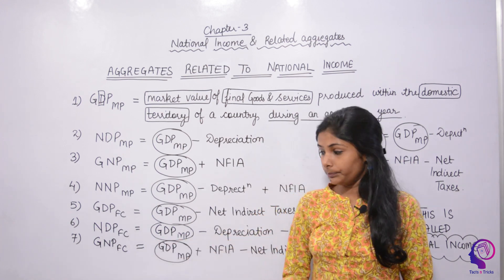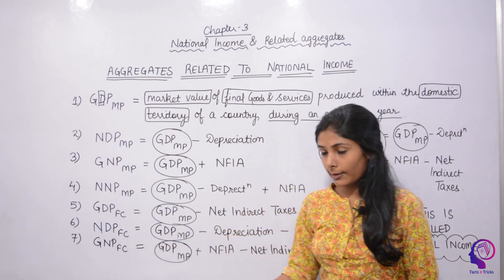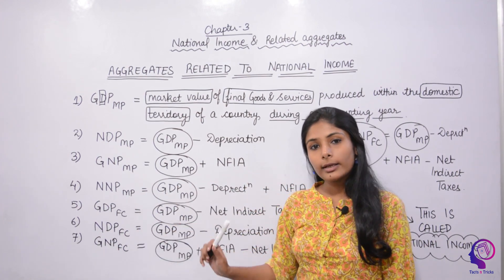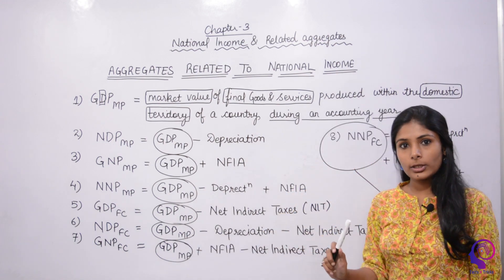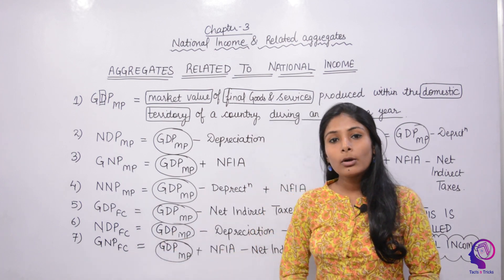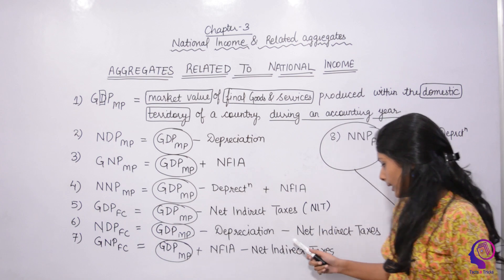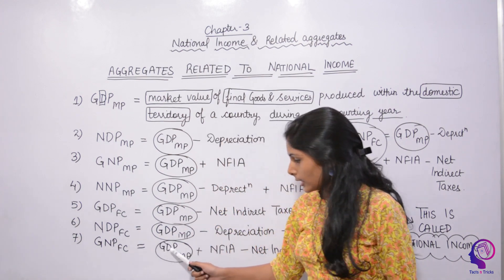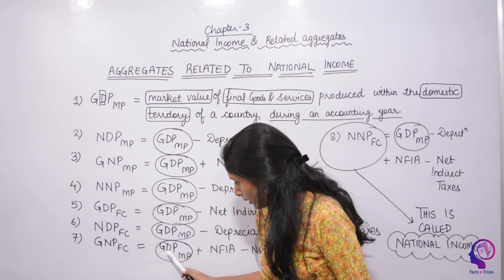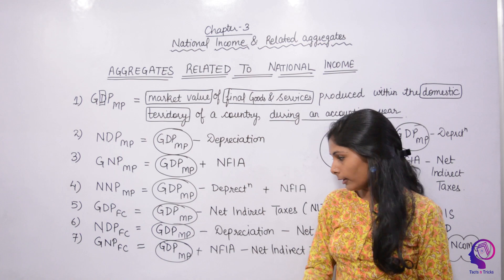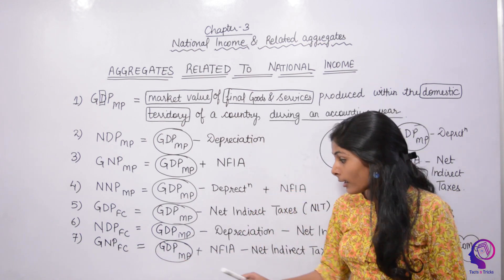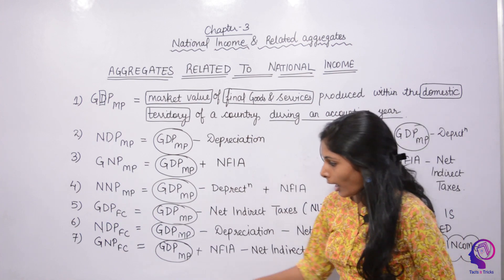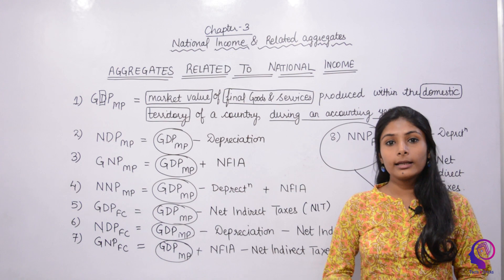For NDP FC from GDP MP: first subtract depreciation (gross to net), then subtract net indirect taxes (MP to FC). For GNP FC from GDP MP: add NFIA (domestic to national), then subtract net indirect taxes (MP to FC). And for NNP FC from GDP MP: subtract depreciation, add NFIA, then subtract net indirect taxes.